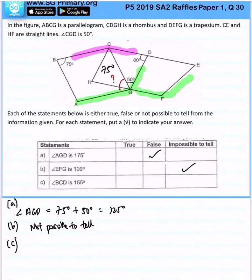So what I want to do, very simple. Let me find angle BCG first. Angle BCG will be 180 degrees minus 75 degrees, and that will give us 105 degrees.